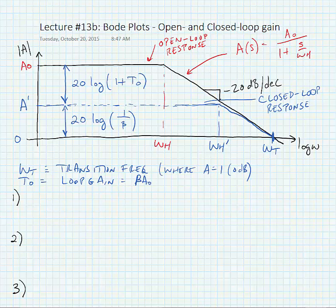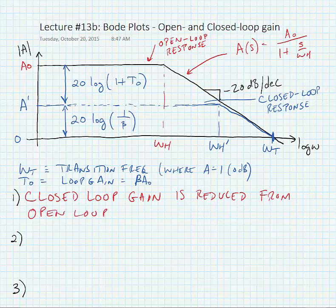So when we connect an amplifier in feedback, we see a couple of things. The closed-loop gain is reduced from the open-loop gain by a factor of one plus T sub zero, that loop gain.